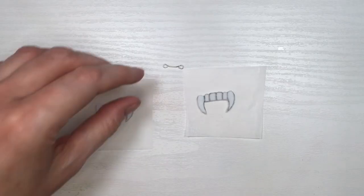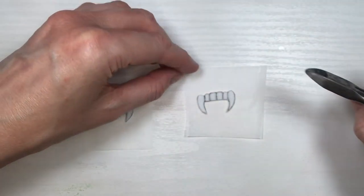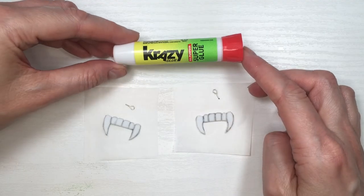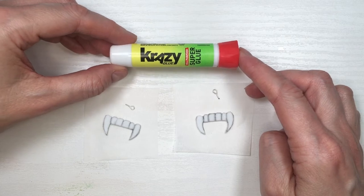I'm going to be taking this eye pin, and I just cut it and made another loop on the other side. I do have a DIY showing you how to make eye pins, and I'm going to be cutting this in half.